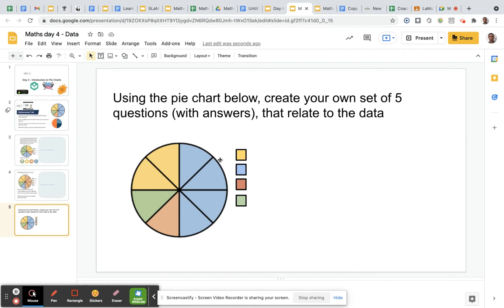So there were 50 people that liked chicken sandwiches and that could be blue. There were 25 people that liked tuna sandwiches and there were how many people that liked ham sandwiches and how many people liked cheese sandwiches.